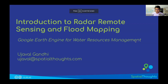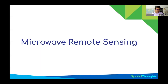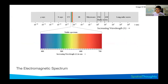We'll start in module 5 on flood mapping with a brief introduction to radar remote sensing, which is a different kind of remote sensing. So far, we've used the Sentinel-2 dataset. Some of you might have used Landsat or MODIS datasets. These are all optical sensors — sensors which are sensitive to certain wavelengths in the visible or infrared spectrum, and these are mostly visual sensors that you can interpret visually.